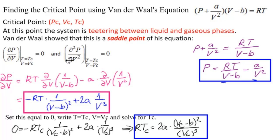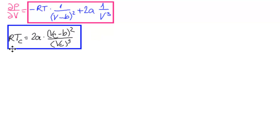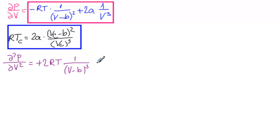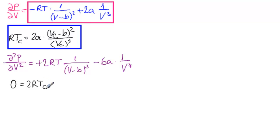Now we find the second partial, which means we take the partial derivative of the first partial with respect to V and set it equal to zero. The second partial ∂²P/∂V² equals 2RT over (V minus B)³ minus 6A over V⁴. Setting this equal to zero with TC and VC, we get 0 equals 2RTC over (VC minus B)³ minus 6A over VC⁴.